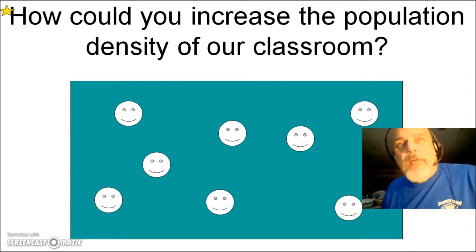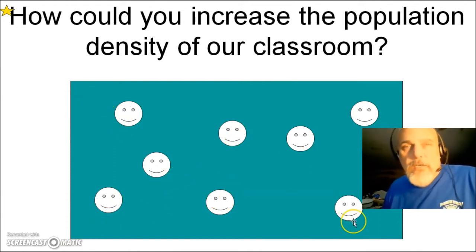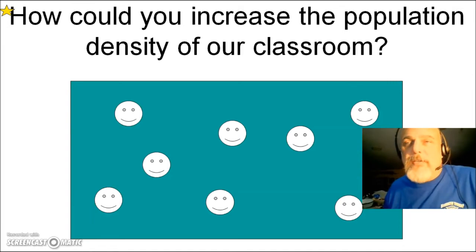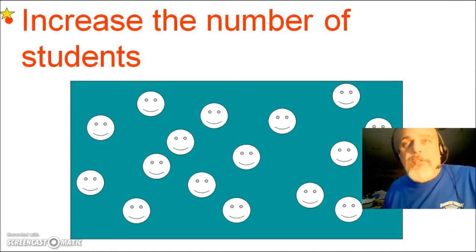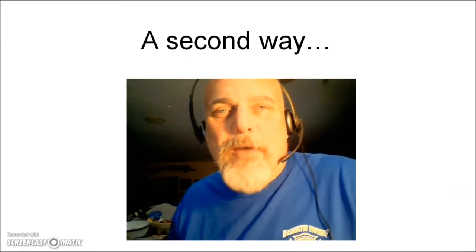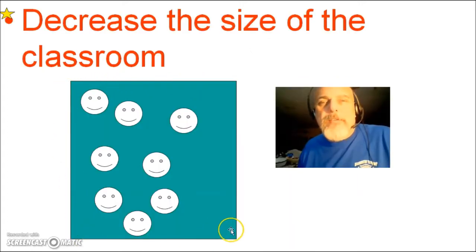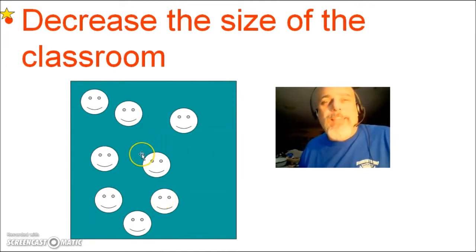Let's say we want to increase the population density of our classroom. If we have eight students in this much space, one way to increase population density is to increase the total number of students — adding more students makes it more crowded. A second way to increase population density is to decrease the amount of space available. Even with the same number of students, less space means more crowding and thus a higher population density.